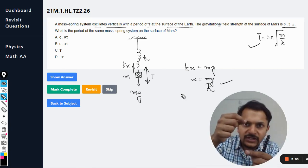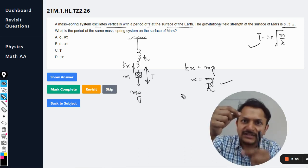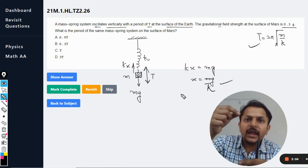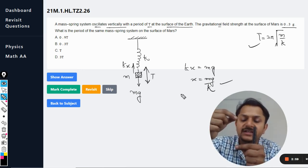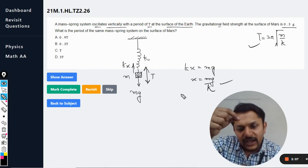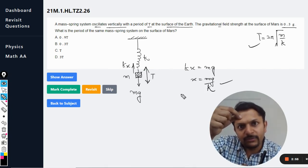But when it was vertical, it fell by a certain distance and it is now having a new equilibrium position. Earlier the equilibrium position was this, the mean position was this. But as soon as it is left, it is now achieving a new equilibrium position.